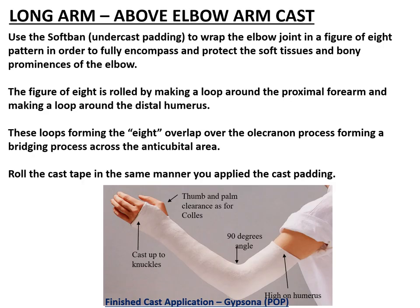Some words about a long arm or above-elbow cast. When using soft band or undercast padding, it's important to wrap the elbow joint in a figure-of-eight pattern in order to fully encompass and protect the soft tissues and bony prominences of the elbow. It is always more difficult to work across the wrist and elbow joint simultaneously, so having assistance when applying this sort of cast is critical. Take cognizance of the bony prominences of the elbow and the area around the thumb and palm, which needs clearance as for a below-elbow cast. The cast should also go up to the knuckles — on the volar side to the distal palmar crease — so the patient is able to use their thumb and all four fingers adequately.